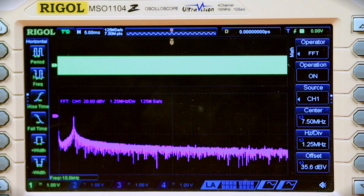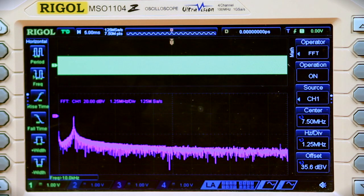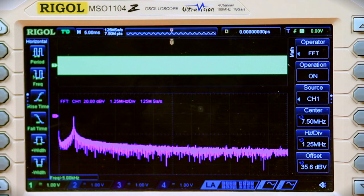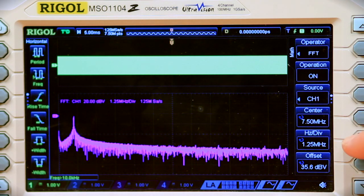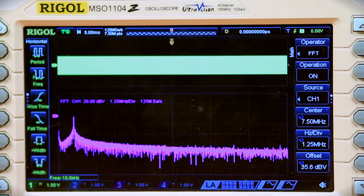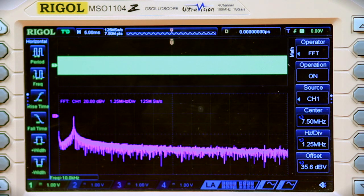Here we see the FFT on the bottom of the screen in purple. We have one peak at 1 megahertz. Our current scale is 1.25 megahertz per division with 7.5 megahertz in the center. That's a pretty clean sine wave.